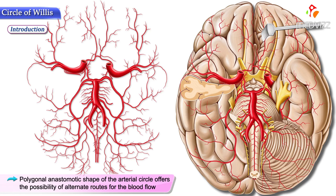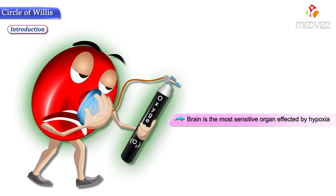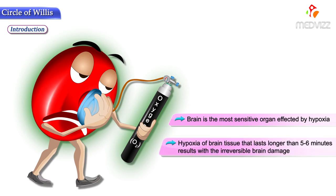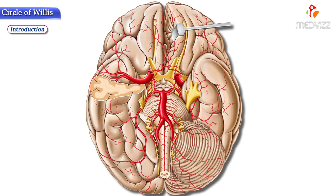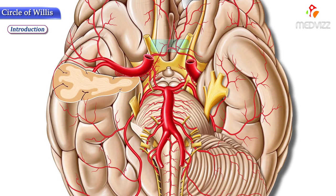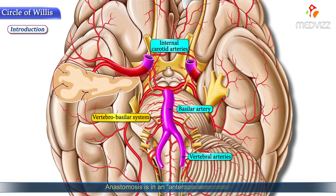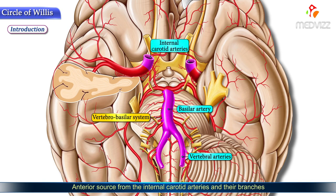This polygonal anastomotic shape of the arterial circle offers the possibility of alternate routes for blood flow, which are extremely essential for proper brain functioning, because the brain is the most sensitive organ affected by hypoxia. Hypoxia of brain tissue lasting longer than five to six minutes results in irreversible brain damage. The Circle of Willis, or circulus arteriosus, is formed by two interconnecting arterial sources: the internal carotid arteries and the vertebrobasilar system, which is formed by two vertebral arteries and the basilar artery. This anastomosis is in an anterior-posterior order.